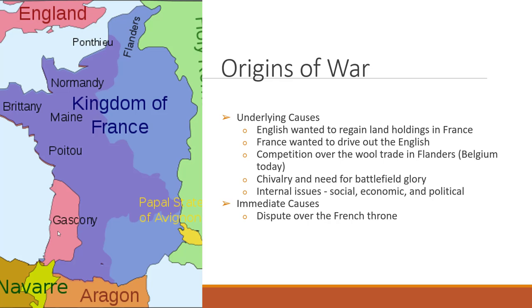The underlying causes of the Hundred Years' War include: England wanting to regain land holdings in France, having been pushed down to just Gascony; France wanting to drive the English out completely; and economic competition over the wool trade in Flanders, which is modern-day Belgium. There were also internal social, economic, and political issues in both countries, along with impoverished serfs under the feudal system, and by the first decade of the war, the Black Death plague.